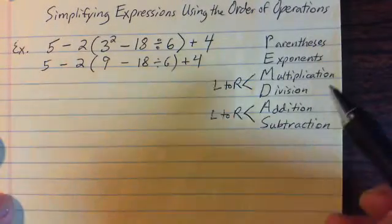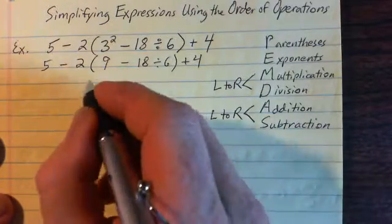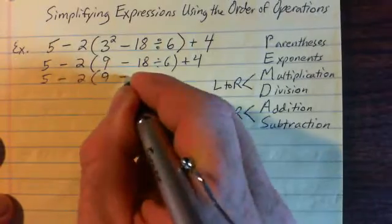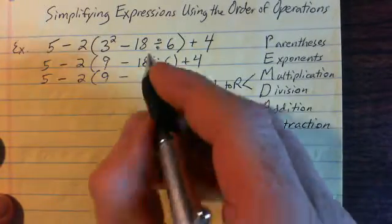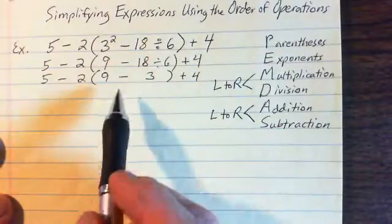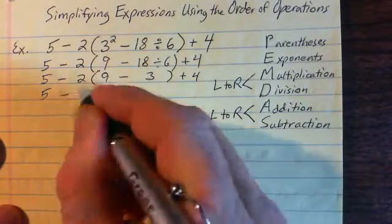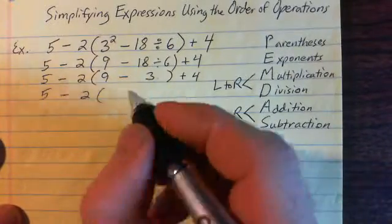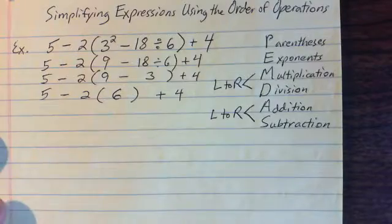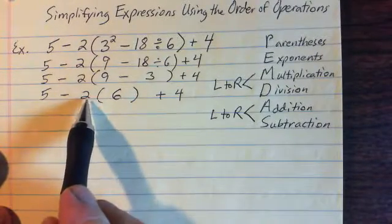Within the parentheses, do I do the subtraction or the division? Division should come first before the subtraction, so I'll do 18 divided by 6, which is 3. Then I do the subtraction: 9 minus 3 is 6.